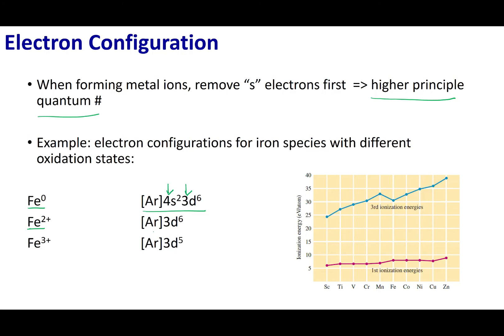This will have an electronic configuration of an argon core, 3d6. Once I've removed all the electrons from those s orbitals, then I can start removing electrons from the d orbitals. If I were to go to iron 3+, then I would have an argon core 3d5.